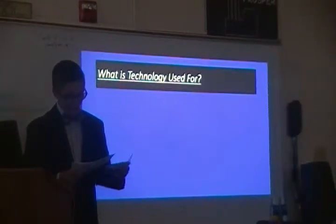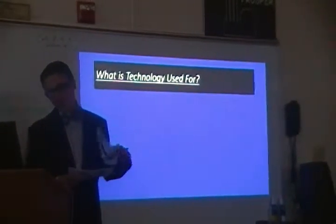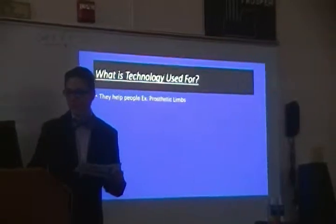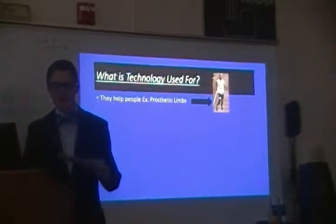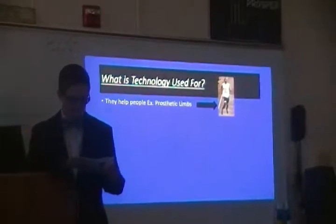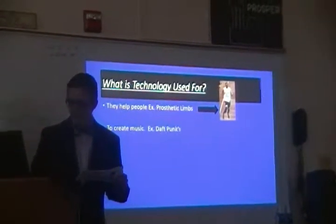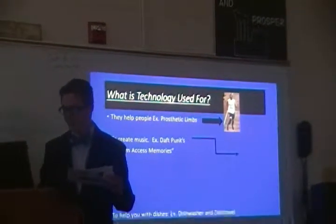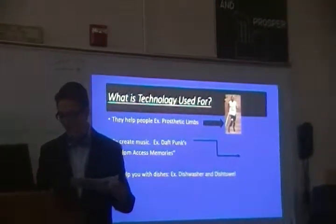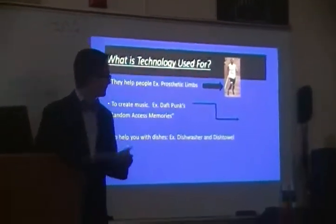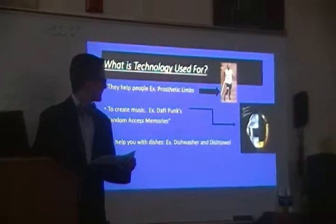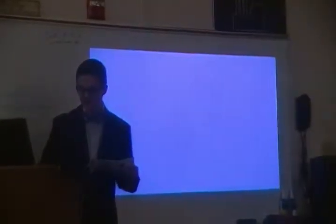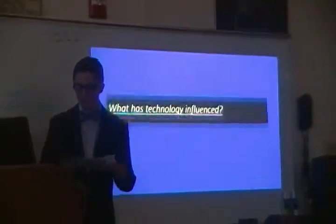What is technology used for? They make prosthetic limbs for people like Oscar Pistorius. They create music — for example, Daft Punk's Random Access Memories, which is an awesome album. And dishwashers, dish towels.